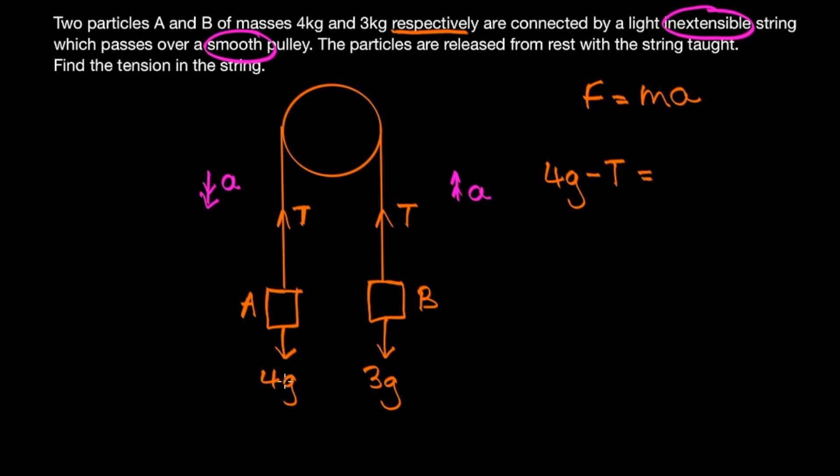So our net force is 4g minus T, and that's equal to ma. So our mass is four kilograms, so m is four, and we don't know the acceleration yet so we can put a.